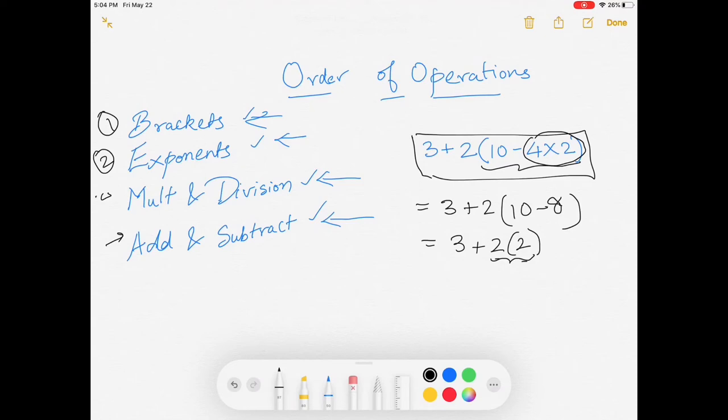So again, according to our order of operations, after brackets, if there are no exponents, we move on to either multiplication or division, whichever comes first from left to right. So we notice that multiplication is there. So 2 times 2, 2 multiplied by 2 is 4. And then what is left is 3 plus 4 is 7.